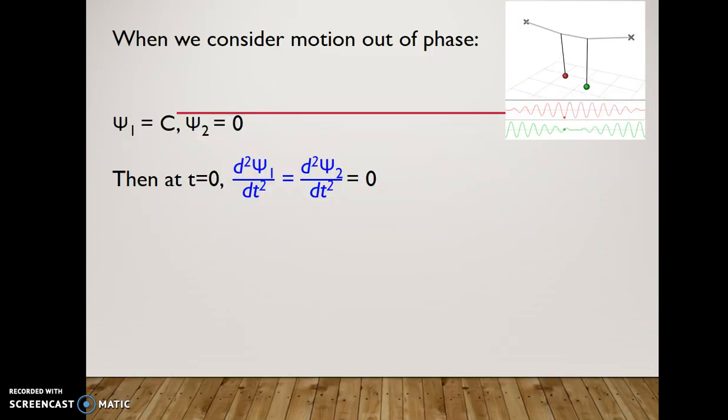When we move the left mass with displacement C to the left and keep the other mass at equilibrium, then at t equals 0, the initial velocity is still 0. But here, qA equals C and qB equals C.